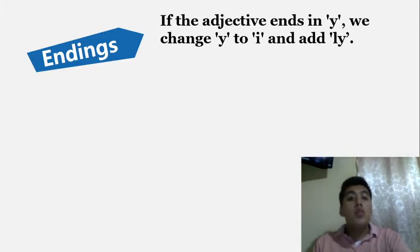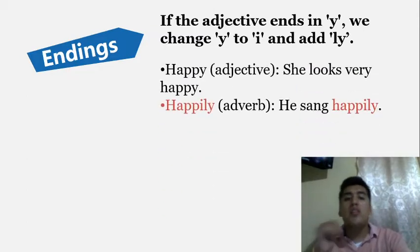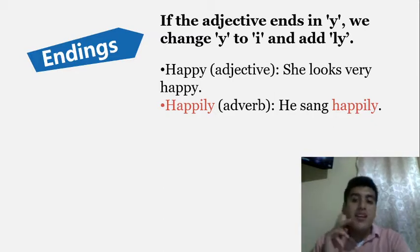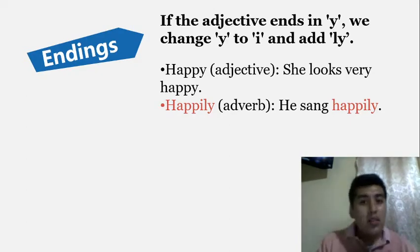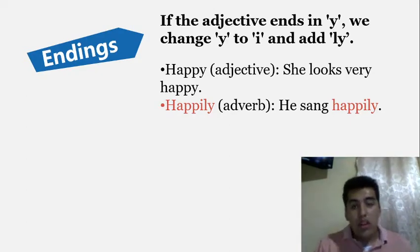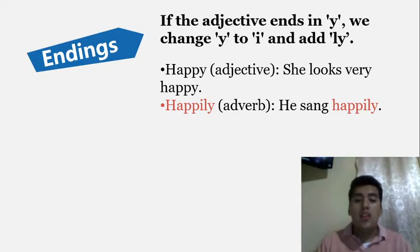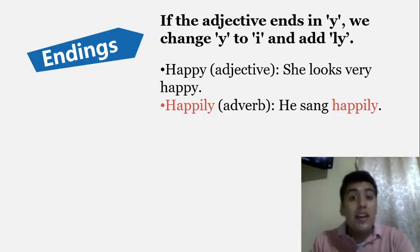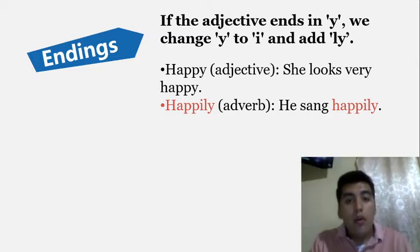Now let's see some endings. If the adjective ends in -y, we change the y to i and add -ly. Look at this: 'happy' is the adjective — 'she looks very happy.' 'Happily' is the adverb — 'he sang happily.' The action is to sing, and we are describing how he performed that action.